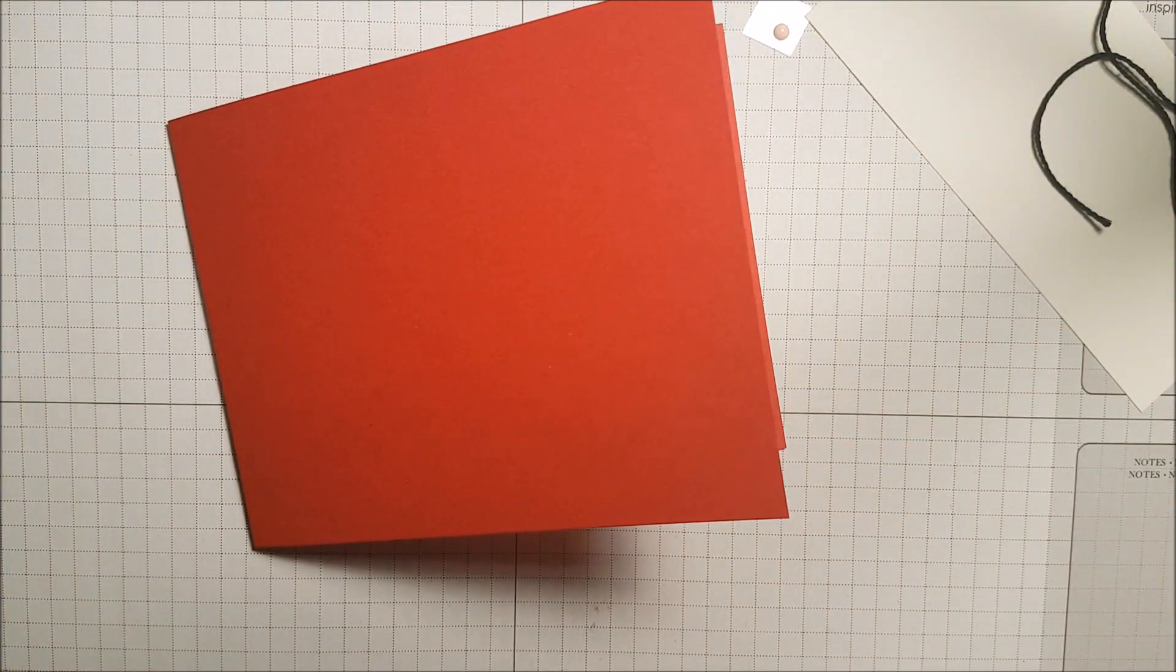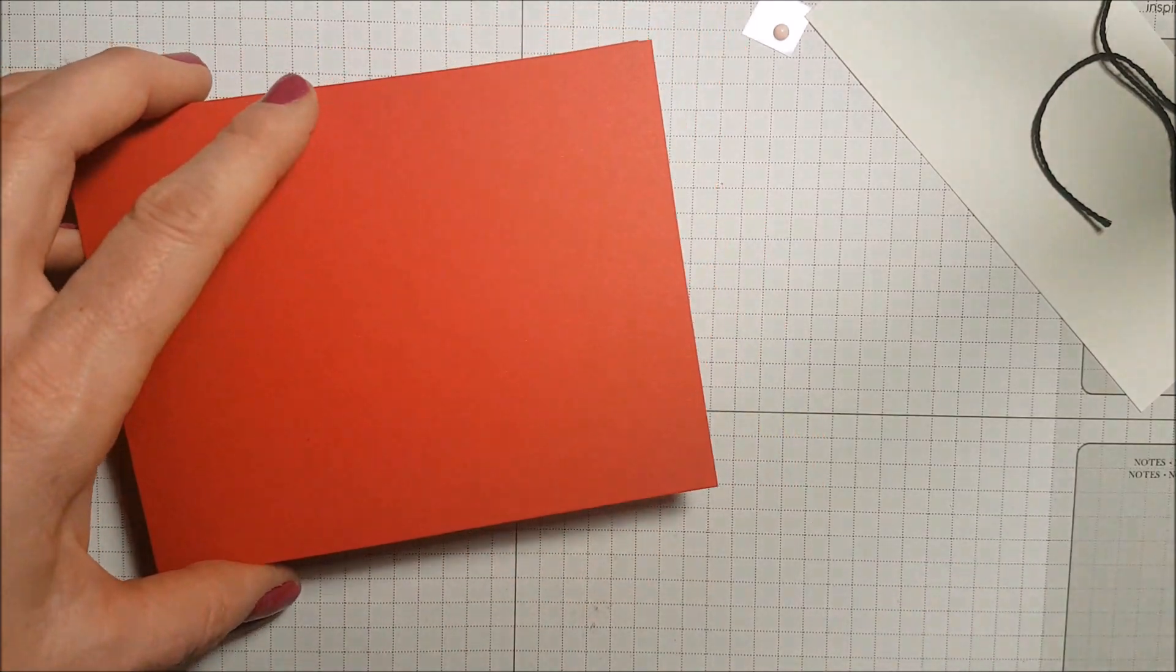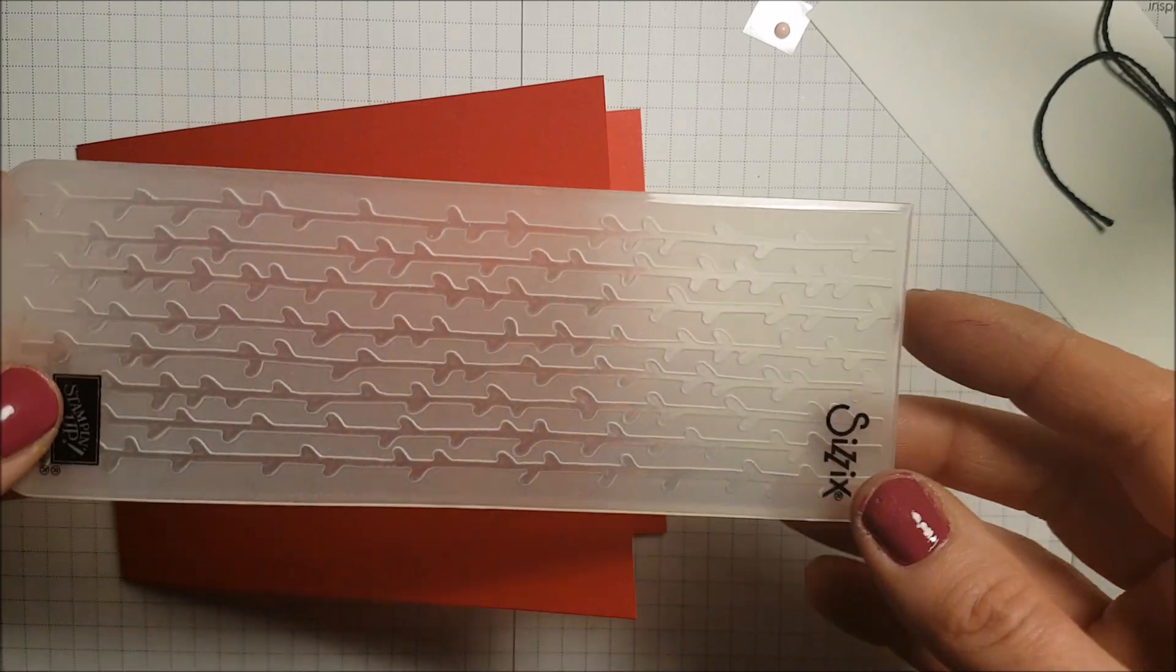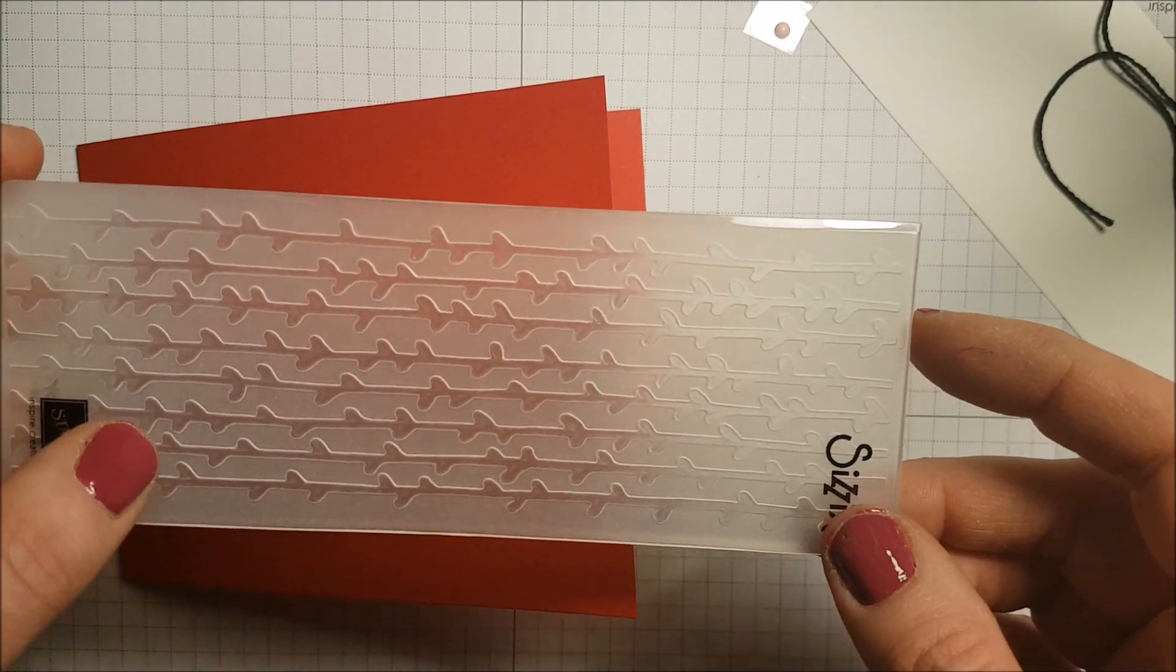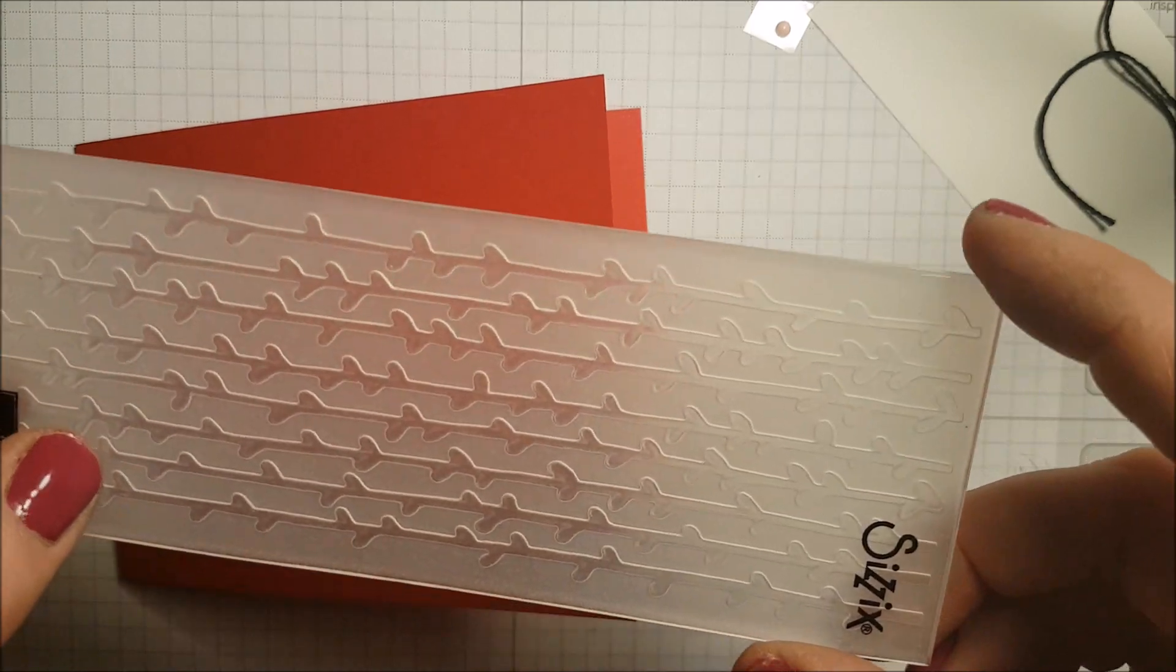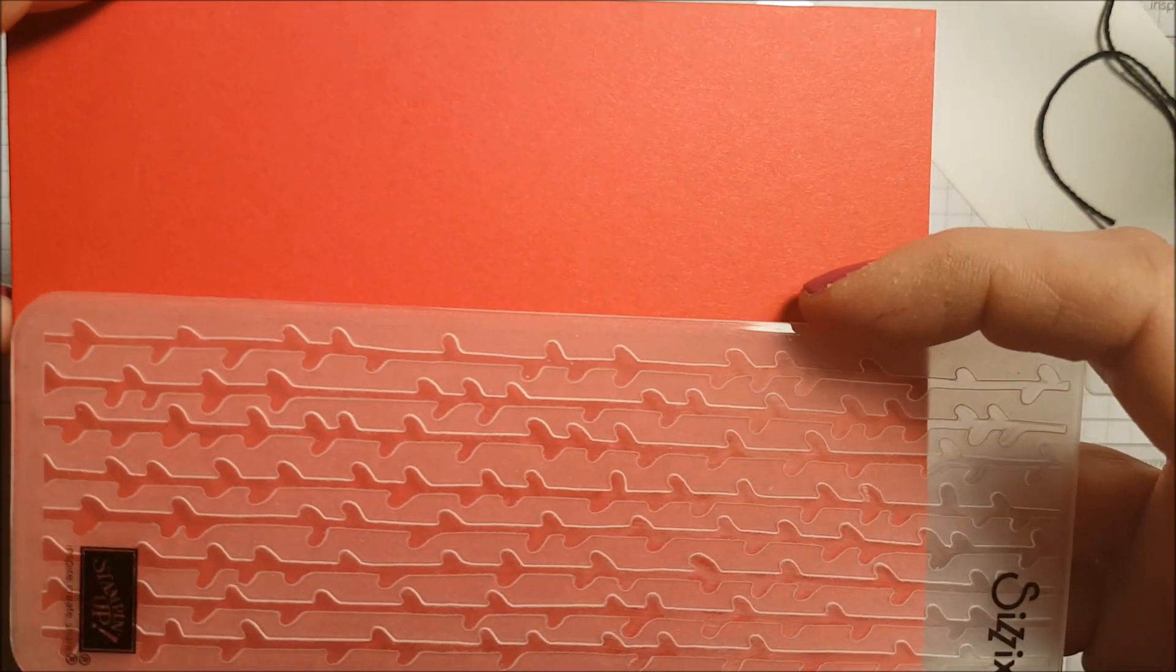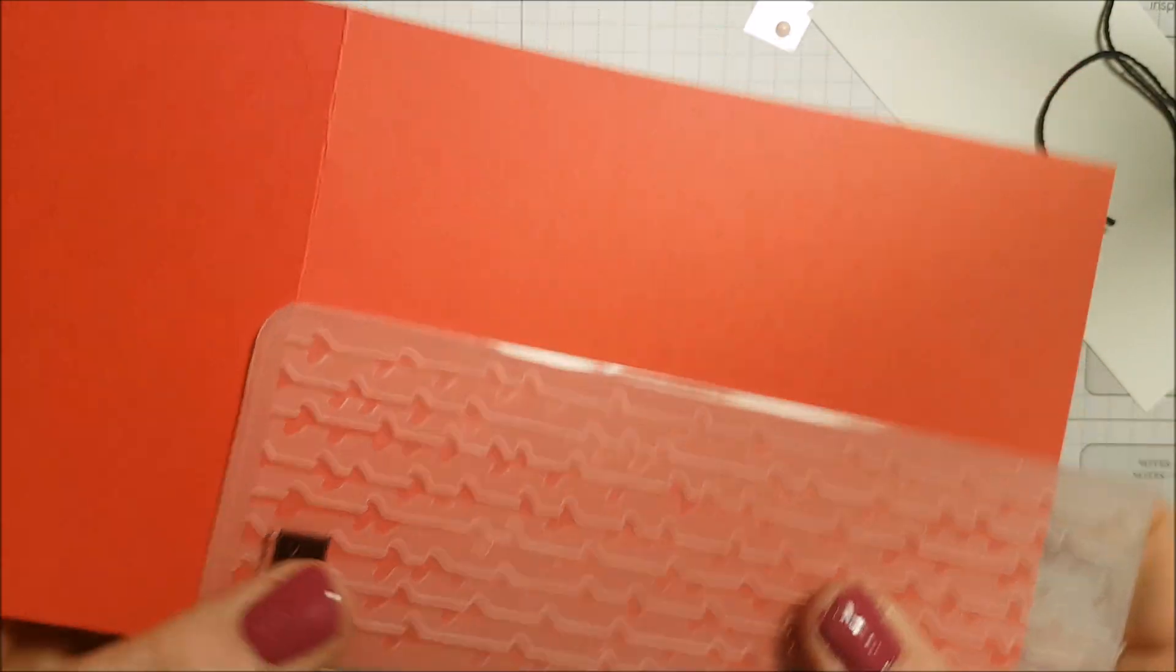One of the things I did for those in my stamp club is your card base will already have been run through the big shot using this folder, which is from the petal pairs impressions embossing folders in the occasions catalog. I put this right on the bottom section, lining these up with the crease on the card, and run it through my big shot.